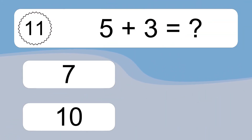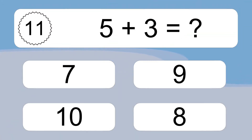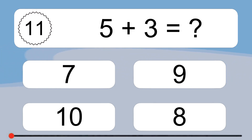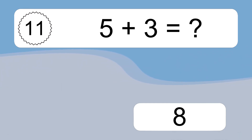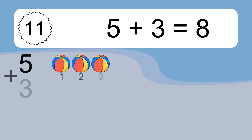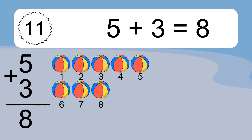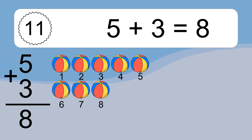5 plus 3 equals what? 5 plus 3 equals 8. Let's count it. 1, 2, 3, 4, 5, 6, 7, 8.